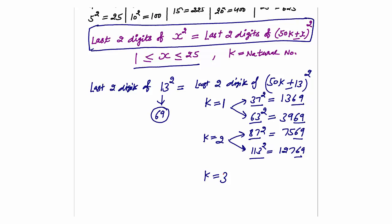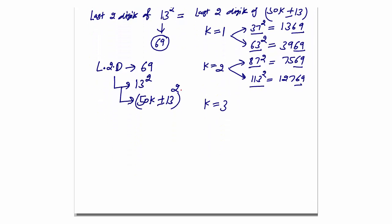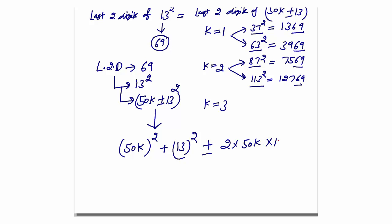Importantly, apart from these numbers, there will be no perfect square where the last two digits are 69. The logic is simple: expanding (50k ± 13)² gives (50k)² ± 2(50k)(13) + 13². This equals 2500k² ± 1300k + 169. Both 2500k² and 1300k always contribute 00 as the last two digits, so the last two digits are always determined by 169, which is 69.